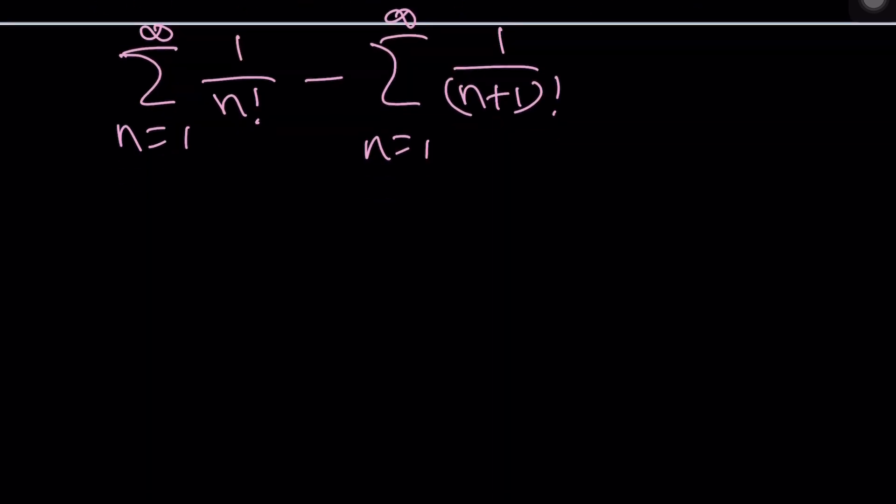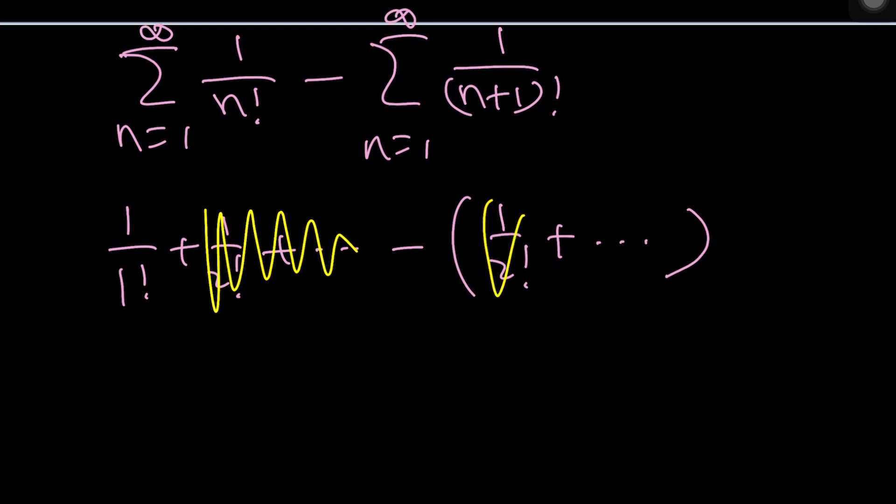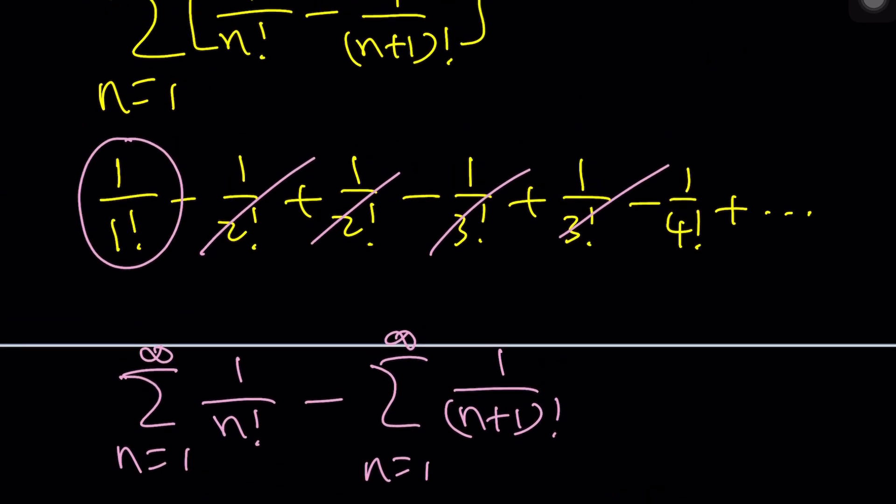So from here, if n is 1, you're going to get 1 over 1 factorial, 1 over 2 factorial, dot dot dot. And the next thing is going to start with 1 over 2 factorial, and dot dot dot. Notice that everything starting with 1 over 2 factorial are going to be the same as the second term. They're all going to cancel out, leaving us with 1. Couldn't we have said that easily here? Probably because everything is going to cancel out. And we're going to end up with 1 at the end.